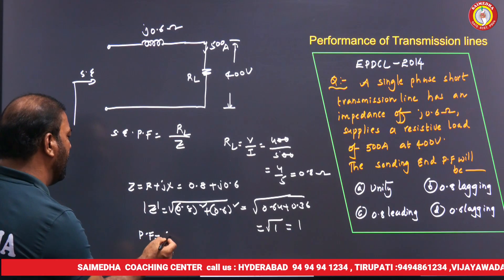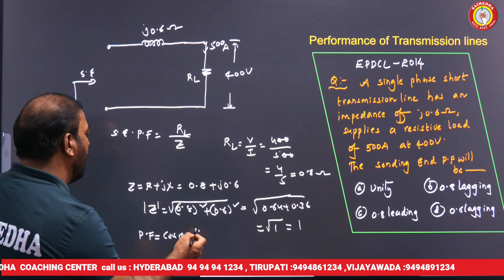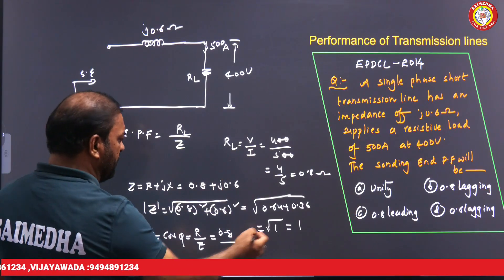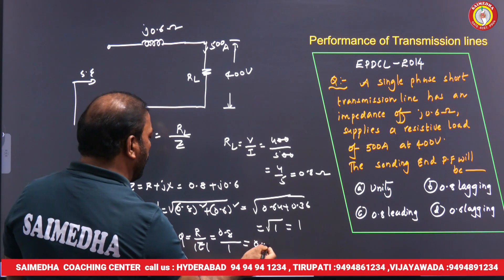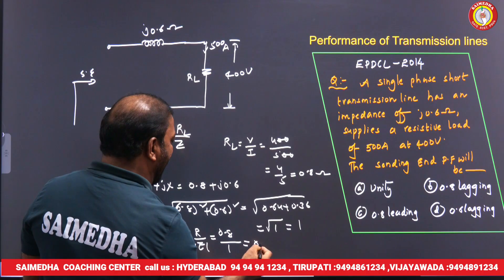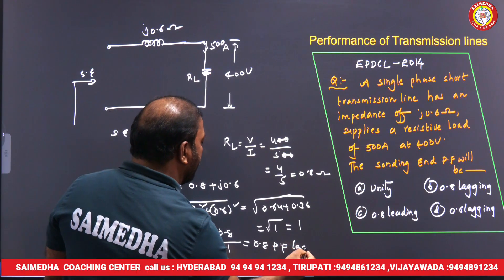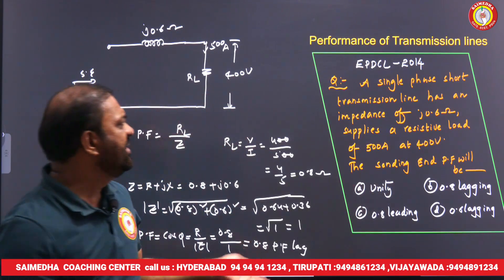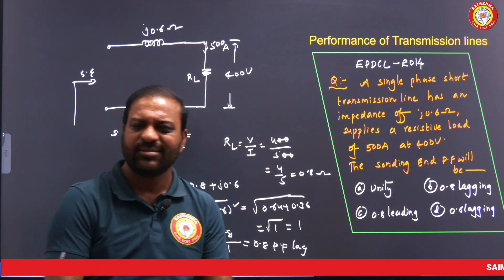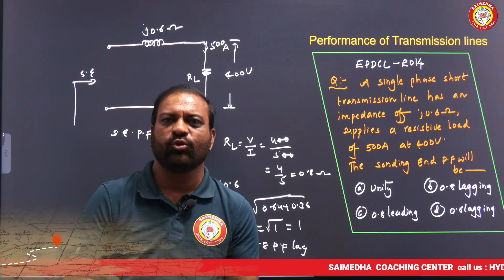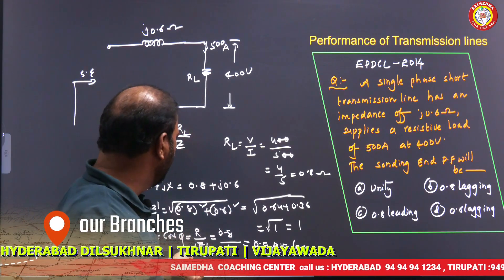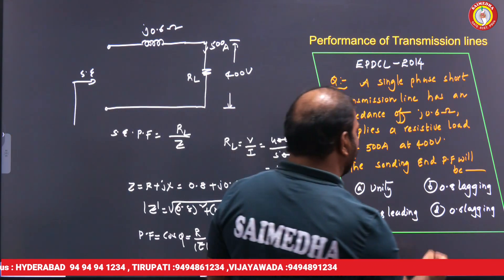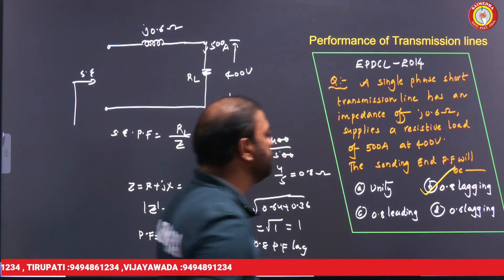The sending end power factor = cosφ = R/|Z| = 0.8/1 = 0.8 lagging. So the sending end power factor is 0.8 lagging. Option B is the correct answer.